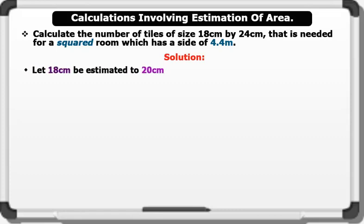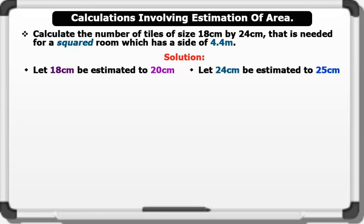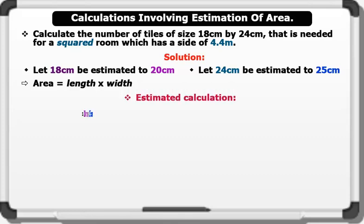Let 18 centimeters be estimated to 20 centimeters. Let 24 centimeters be estimated to 25 centimeters. Note that area equals length times width. Now let's see the estimated calculation: 20 centimeters times 25 centimeters gives us 500 centimeters squared.